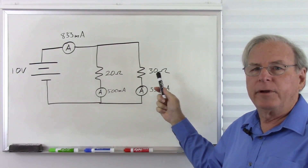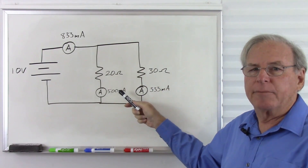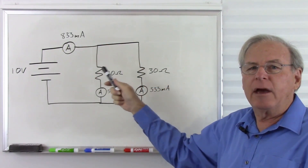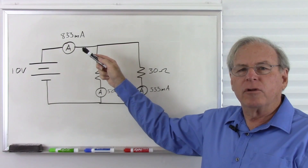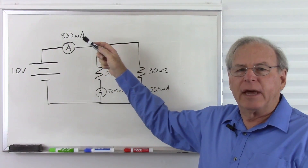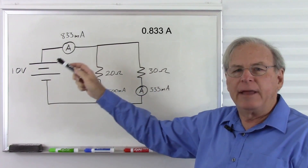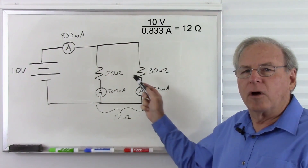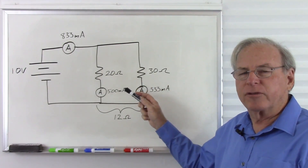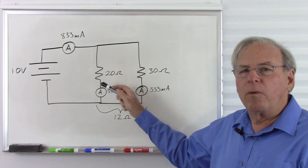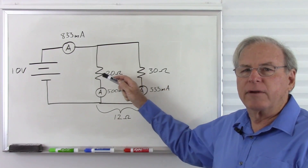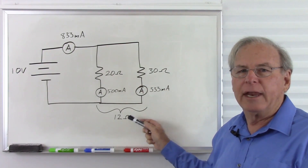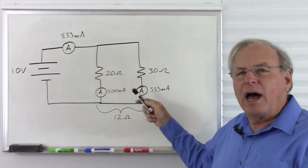Here I now have 20 ohms in parallel with 30 ohms. We have 500 milliamps here and 333 milliamps here for a total of 833 milliamps. Let's calculate the total resistance using Ohm's law. We have 833 milliamps — that's 0.833 amps. Divide that into 10 volts and we get a total of 12 ohms. The total resistance is always lower than your lowest value resistor, so with 20 ohms and 30 ohms, our total resistance is less than 20 ohms, giving us 12 ohms.